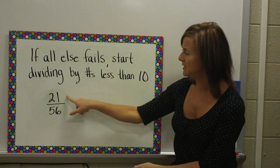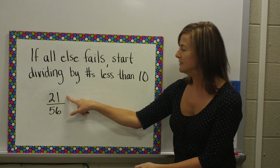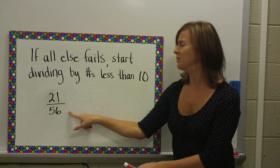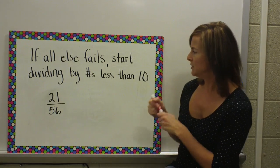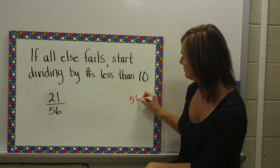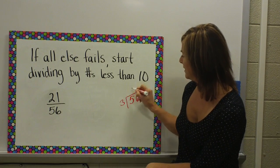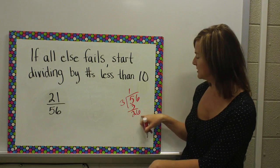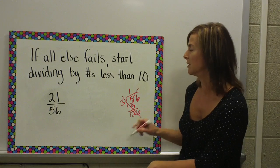Well, I know 3 times 7 gives me 21, but I'm not sure about 56. So, I could go over here, I could try it, and it looks like, no, nothing times 3 gives me 26, so 3 won't work.